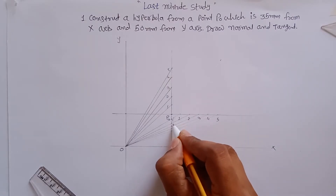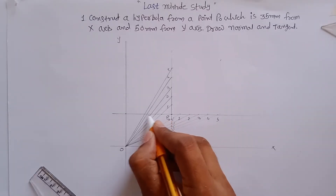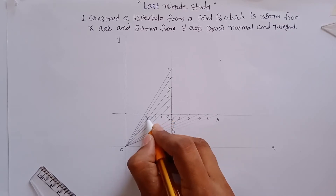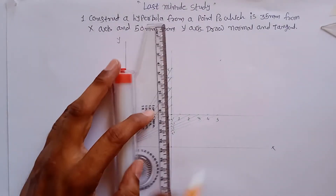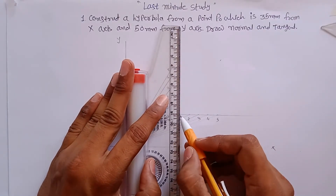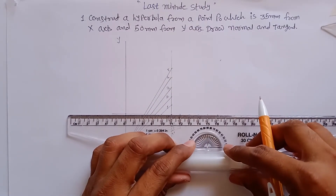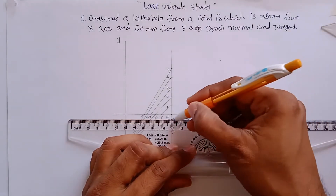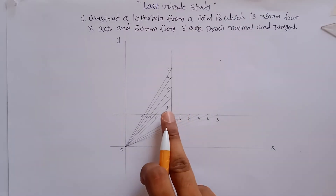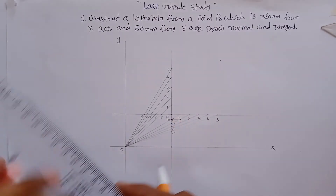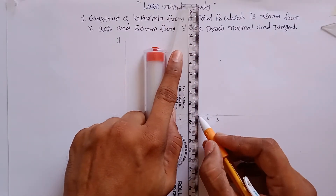The intersecting points on the line are labeled one-dash, two-dash, three-dash, four-dash, and five-dash. Now — this step is a little crucial — draw a vertical line from point one and a horizontal line from point one-dash, and find their intersecting point.